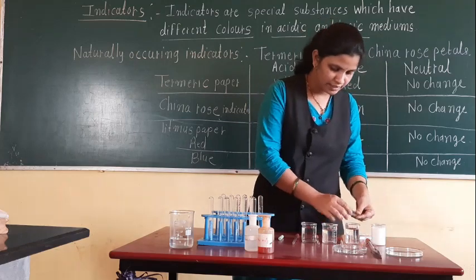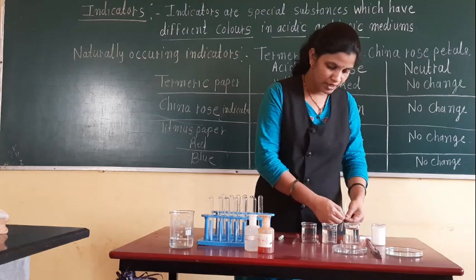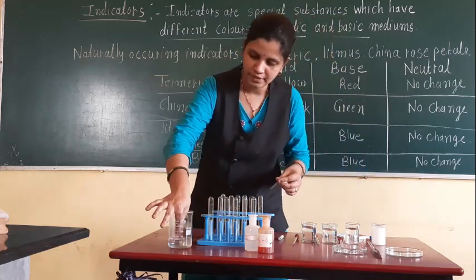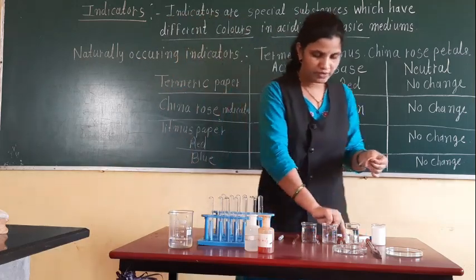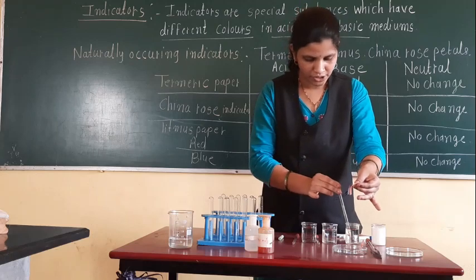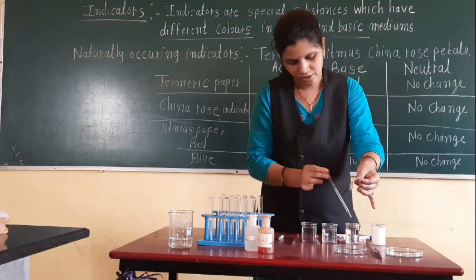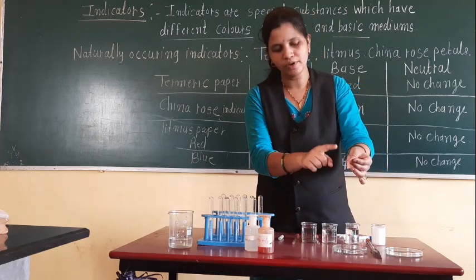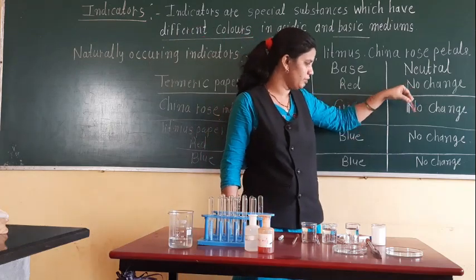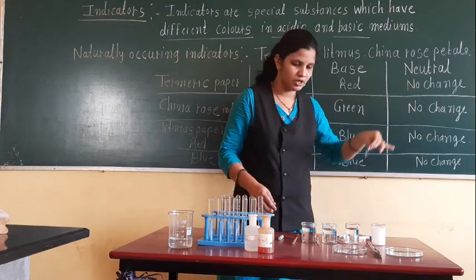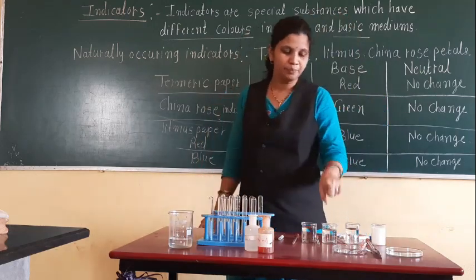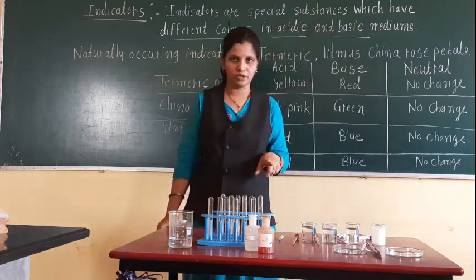Now we will check solution C — is it acidic, basic, or neutral? Take two litmus papers, moist them, and add one drop of solution C on blue litmus paper — no change. Add one drop on red litmus paper — no change. Blue remains blue, red remains red. No change on either means solution C is neutral.